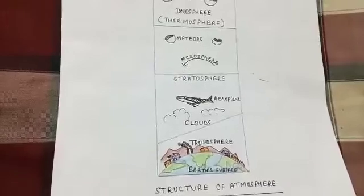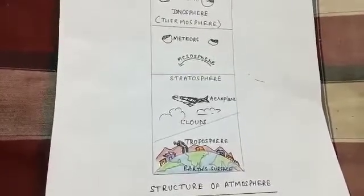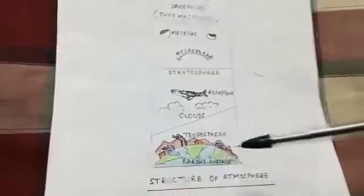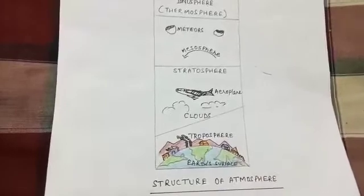Now all the weather phenomena such as cloud formation, fog, rainfall, snowfall, storms, lightning, they all take place in this layer of the atmosphere, that is troposphere.